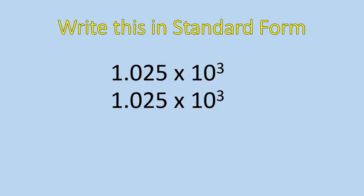So let's do another one. We're going to write this number in standard form — right now it's written as a power of 10. 1.025 times 10 to the power of 3. We're going to shift the decimal three places: one, two, three. And that leaves us with 1025. When the decimal is at the end, we don't write it in. That's just a standard way of writing a number, 1025.